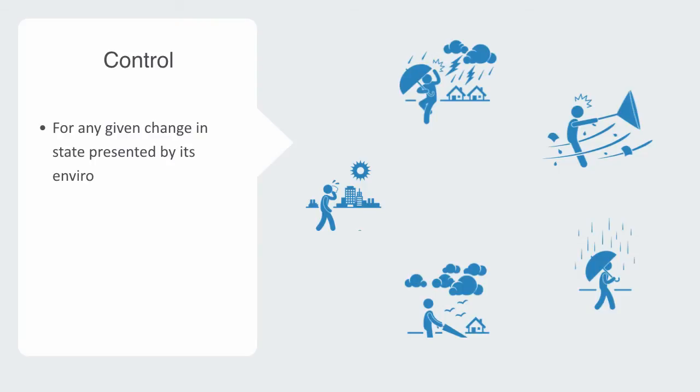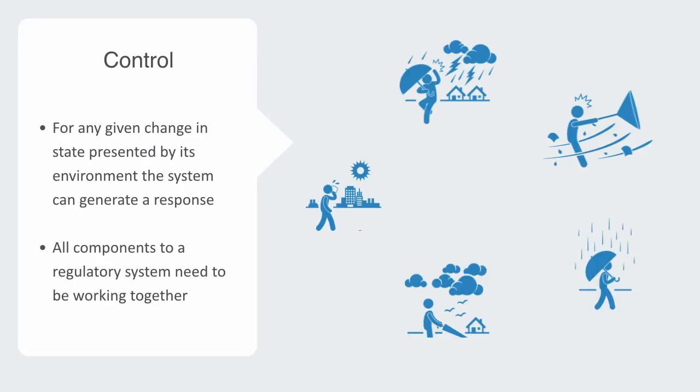For a system to be regulated or under control means that for any given change in state presented by its environment, the system can generate a response so as to maintain functionality. In order for a system to be able to regulate itself, all of these components to a regulatory system need to be working together.